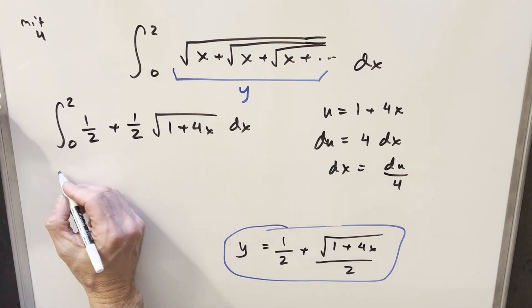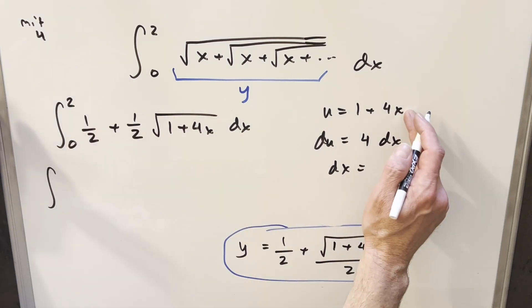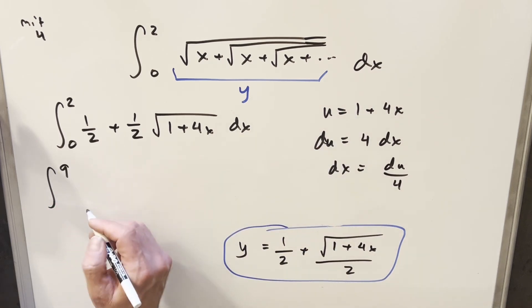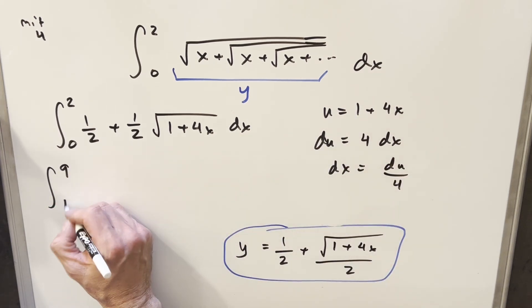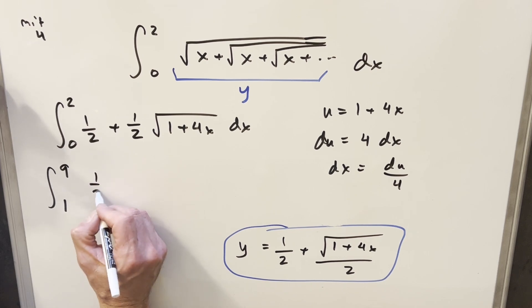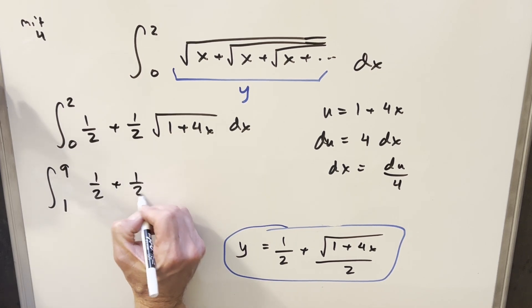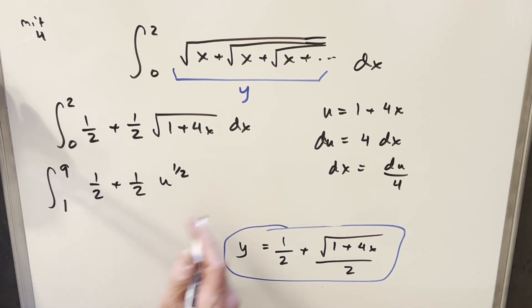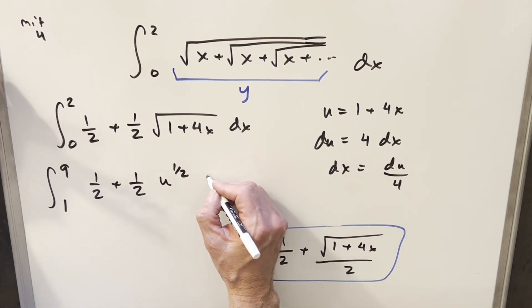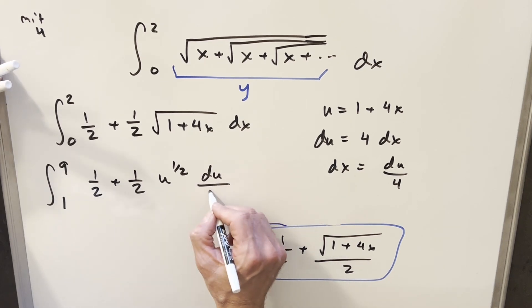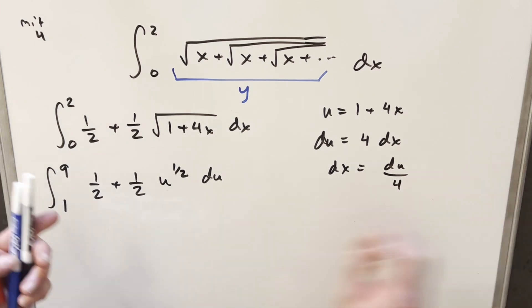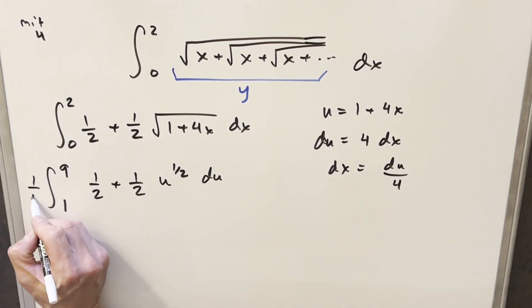Now I'll proceed with the substitution. Plugging 2 in for x, we get 2 times 4 is 8 plus 1, which is 9 for the upper bound. Plugging in 0, we have 1 for the lower bound. Rewriting this, we have 1 half plus 1 half times the square root of u, which I'll write as u to the 1 half. dx becomes du over 4, and I'll bring the 1 fourth outside the integral.